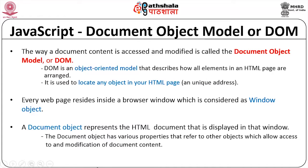JavaScript comes in the context of DOM as a scripting or programming interface to access the DOM elements. DOM provides a way to describe a document in the form of a tree, so any document can be accessed, modified, or manipulated with the Document Object Model. DOM is an object-oriented model that describes how all elements in an HTML page are arranged.